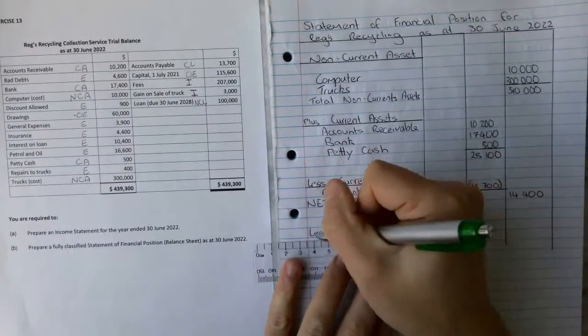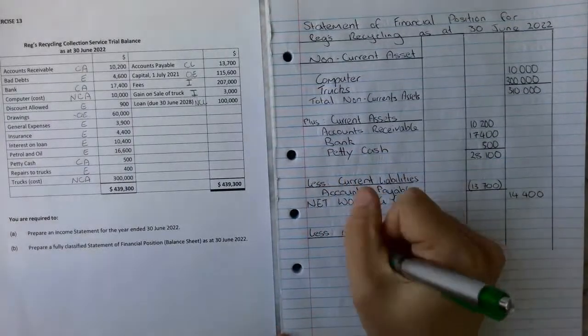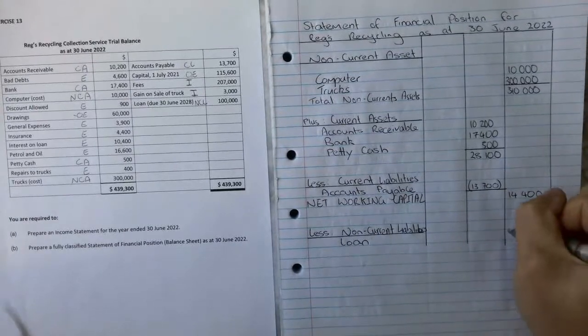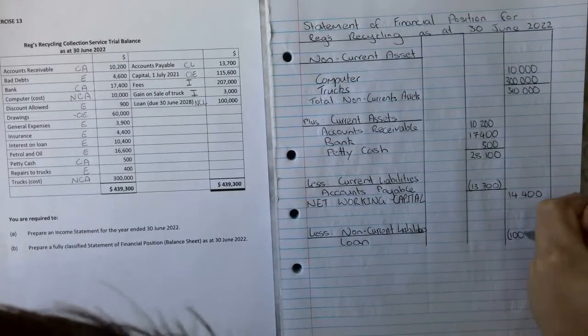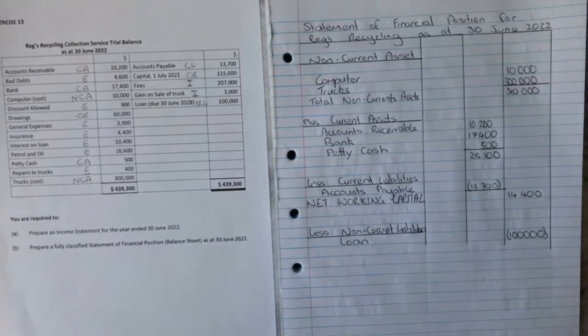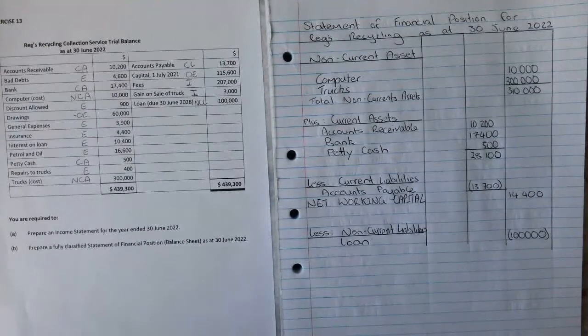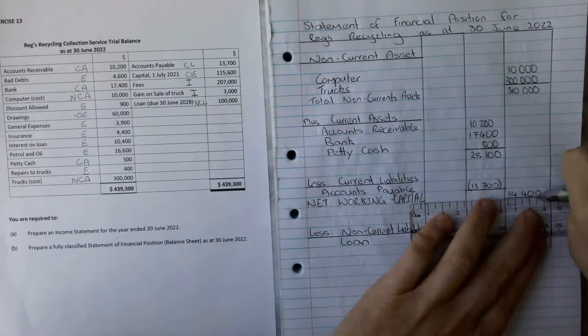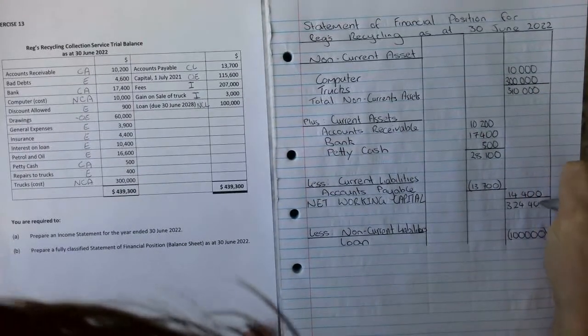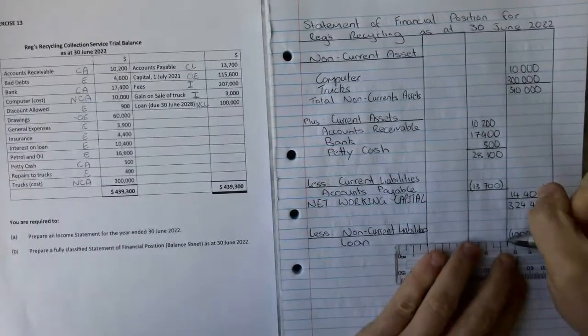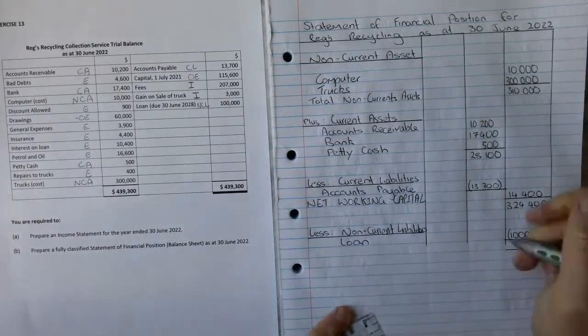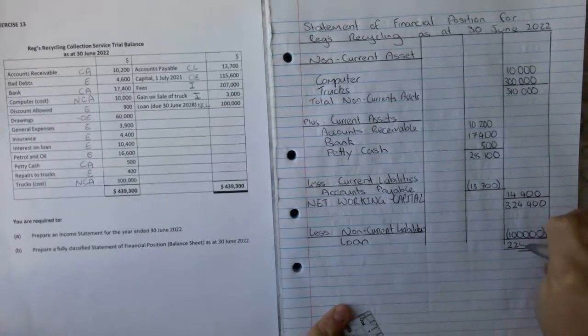Our only non-current liability is our loan and that's $100,000. We can put that there. Now, oh see, even I make mistakes. We should have totaled that there, so that should be $324,400. That just makes this last bit a bit easier. Then we single and then double underline this.